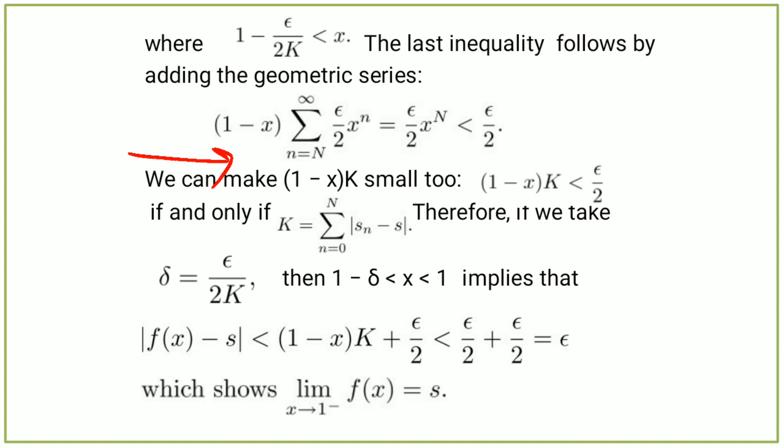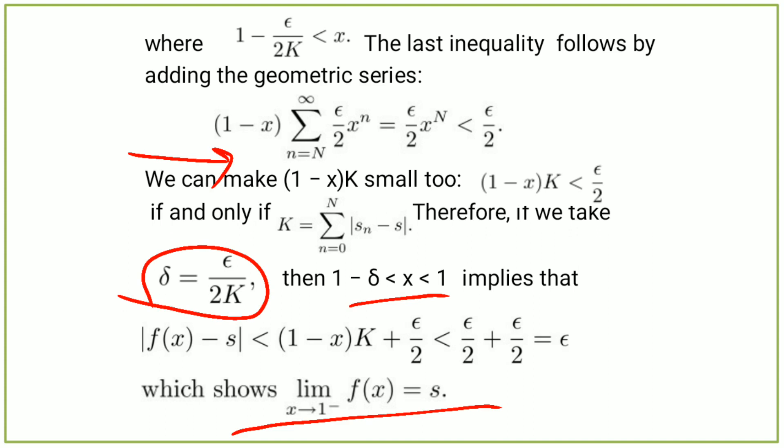We can make (1 minus x) times K less than epsilon over 2, if and only if K equals the summation from n equals 0 to N of mod of sₙ minus s. Therefore, if we take delta equal to epsilon divided by 2K, then 1 minus delta less than x less than 1 implies that mod of f(x) minus s is less than (1 minus x) times K plus epsilon over 2, which is less than epsilon over 2 plus epsilon over 2, which equals epsilon. This shows that the limit as x tends to 1 from the negative of f(x) equals s.